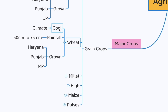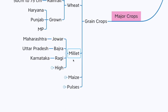Wheat requires a cool climate and a rainfall of about 50 to 75 centimeters. It is grown in large quantities in Haryana, Punjab, and Madhya Pradesh. Millets — jowar, bajra, and ragi — comprise the millet category. Jowar is mainly grown in Maharashtra, bajra in Rajasthan, and ragi in Karnataka. Remember that millets have high nutritional value.